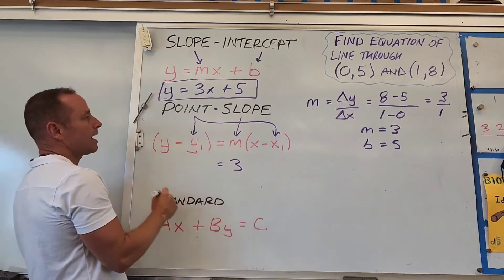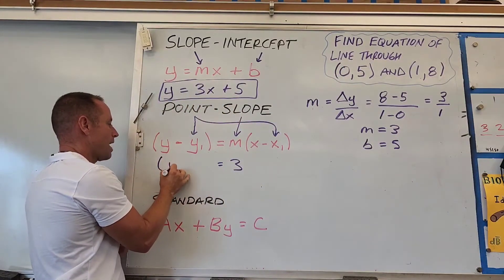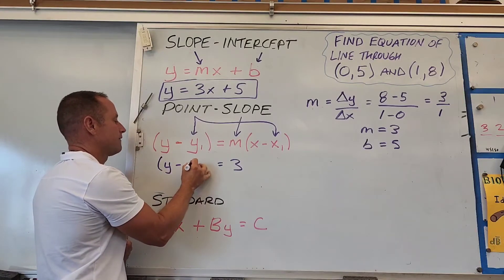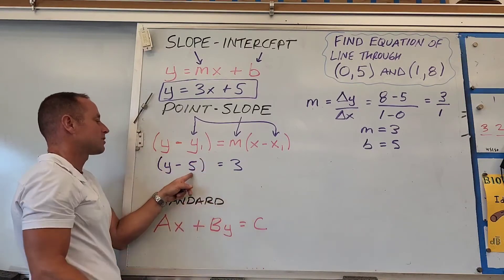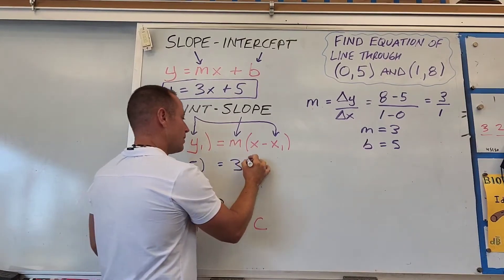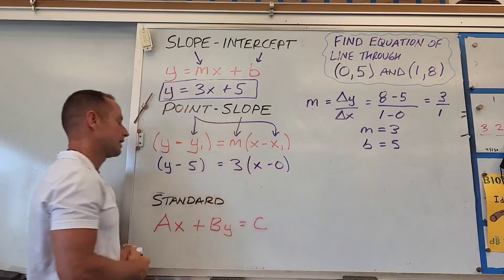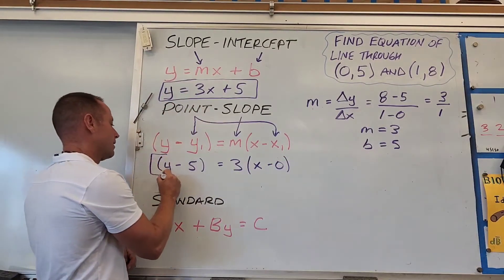An easy point to use is (0,5). So we can write y minus 5 equals 3 times (x minus 0). That's one way to write this in point-slope form.